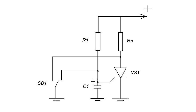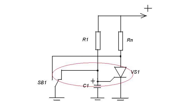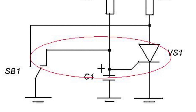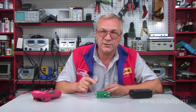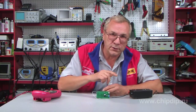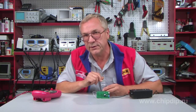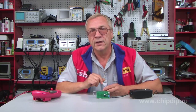Let us examine a simple control circuit thyristor switch scheme as an example. In the scheme, buttons without fixed position are used. Initially, normally closed button contacts bypass the thyristor control circuit. The thyristor resistance is maximum, and no current flows through the load.